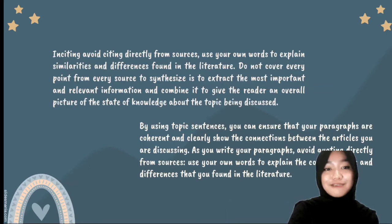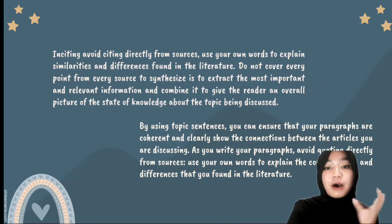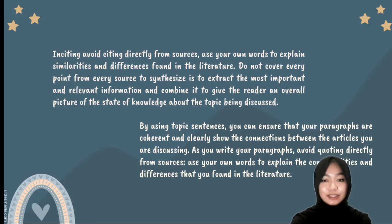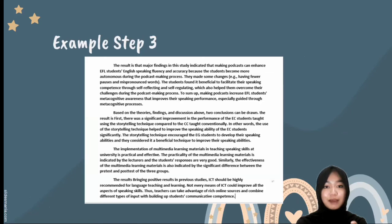When citing and writing, avoid quoting directly from sources. Use your own words to explain the similarities and differences found in the literature. Do not cover every point from every source — the goal is to extract the most important and relevant information and combine it to give the reader an overall picture of the state of knowledge about the topic being discussed. By using topic sentences, you can ensure that your paragraphs are coherent and clearly show the connection between the articles you are discussing. This is the example of step three that we have discussed.